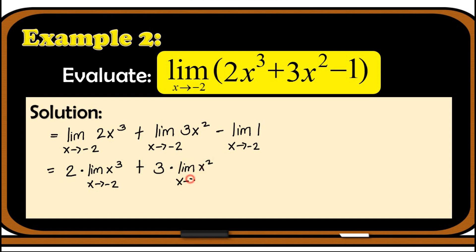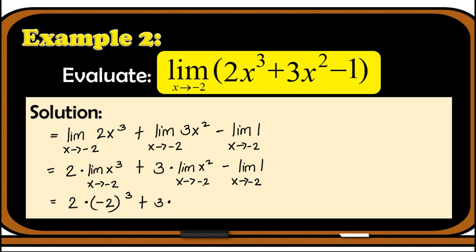So we now have 2 times the limit of x cubed plus 3 times the limit of x squared as x approaches negative 2, minus the limit of 1 as x approaches negative 2. The next thing we apply is the limit of a power. To evaluate, we substitute negative 2 to x then raise it to the power of 3. So we have 2 times negative 2 raised to 3, plus 3 times negative 2 squared, minus the limit of a constant which is 1.